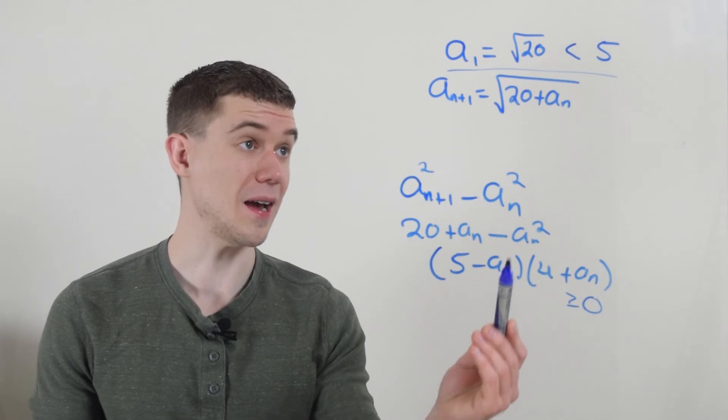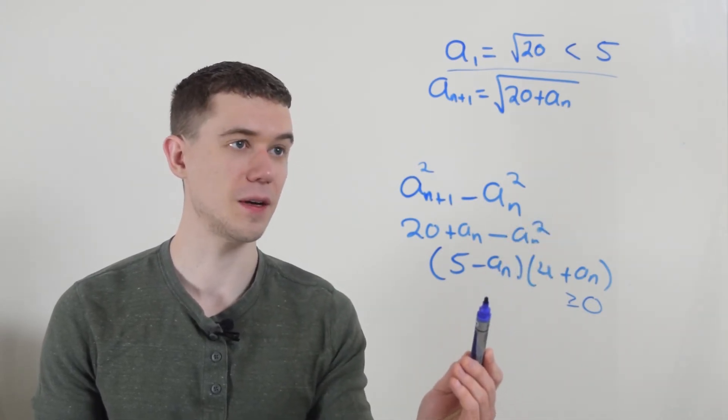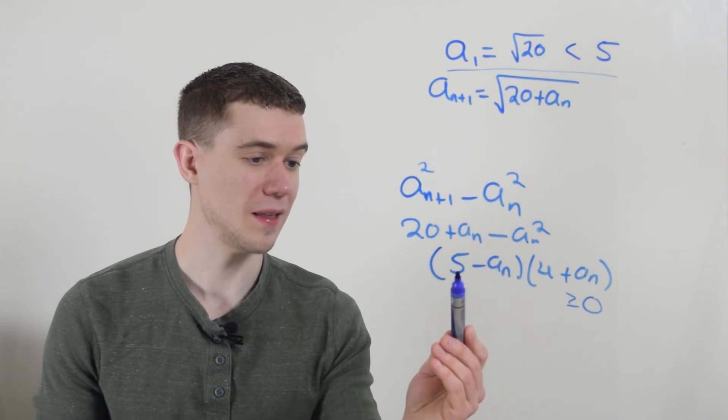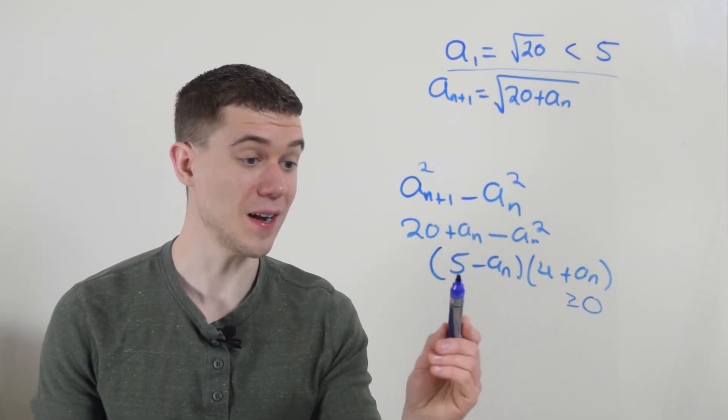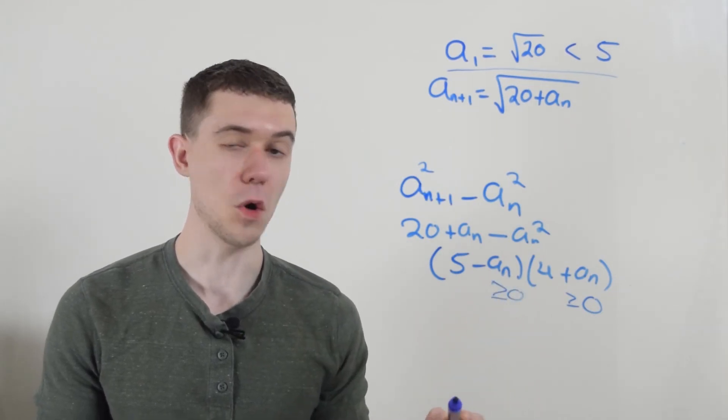Well, every a_n term is less than five. If every a_n term is less than five, then this term has to be positive, because it would be five minus something less than five. Both of these factors are positive.